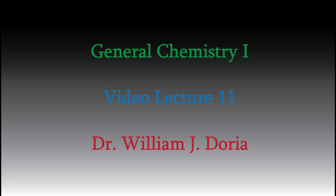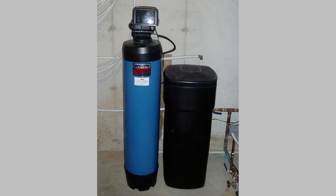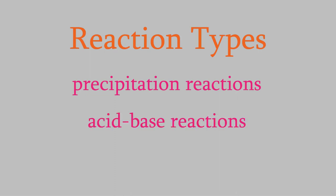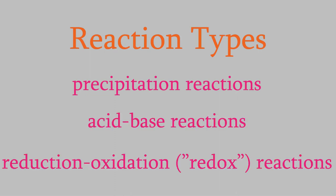Our topic today will give us a chance to learn about one of the appliances you might have in your basement if you live in a place like Rockford, Illinois, where these videos are filmed. I just mentioned that there are three basic types of chemical reaction, so let's start by talking about those. They are precipitation reactions, acid-base reactions, and reduction oxidation or redox reactions.